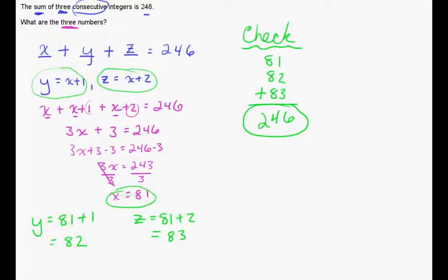So our last bit of work we need to do is just sum this all up with a final statement. Therefore, the three numbers are 81, 82, and 83.